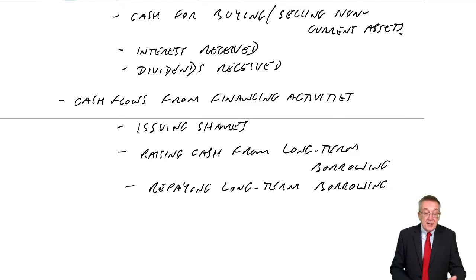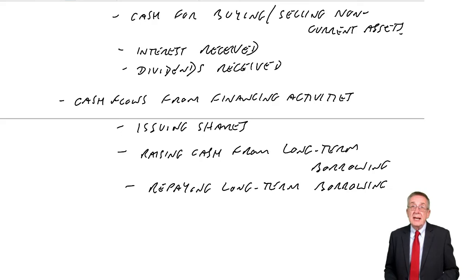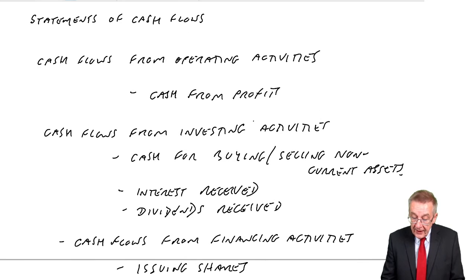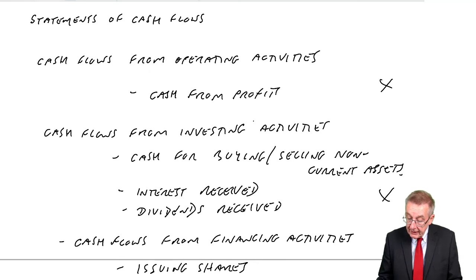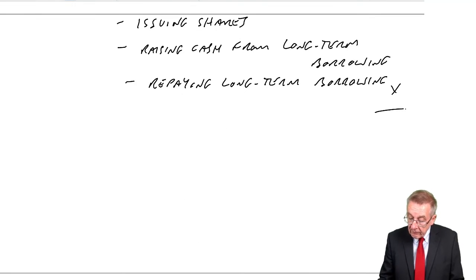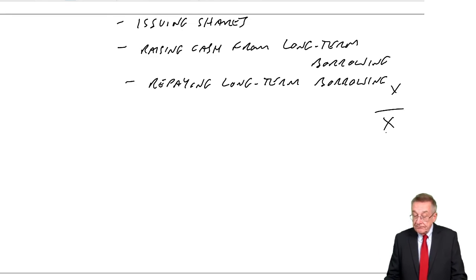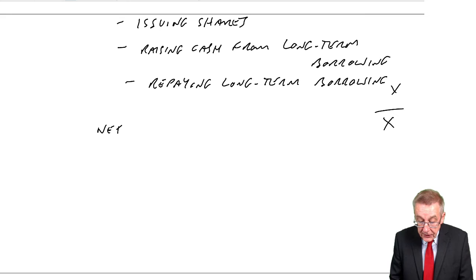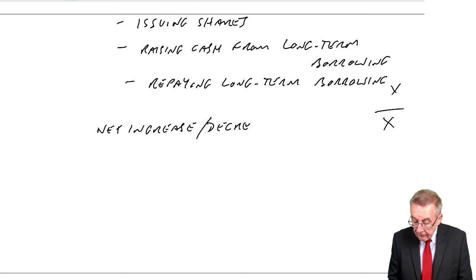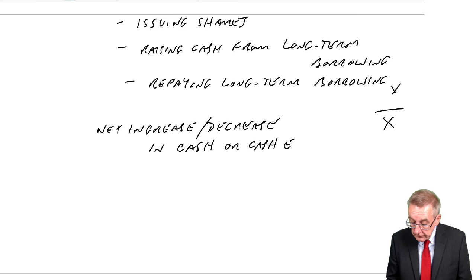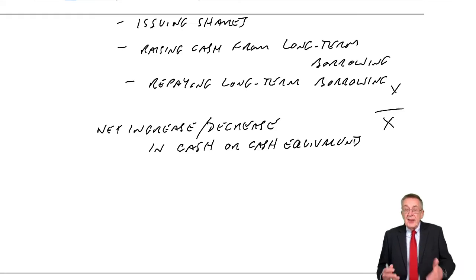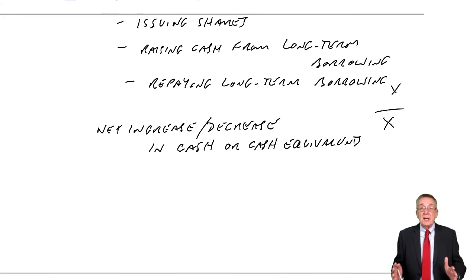So as you can see, forget about all the little figures underneath — we'll deal with that in the example. But if we can get the net cash receipt or payment under each of the three headings, then the total at the end will give us the net increase or decrease in what we call cash or cash equivalents. As you are concerned, it is basically the increase or decrease in cash — their bank balance, has it gone up? Has it gone down?